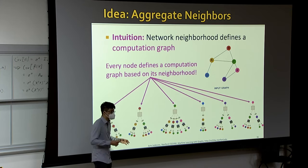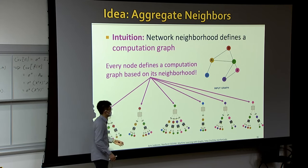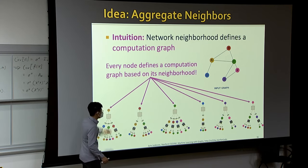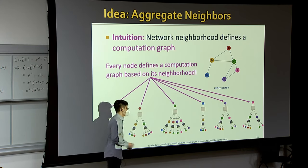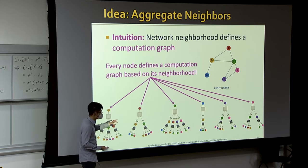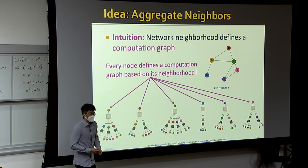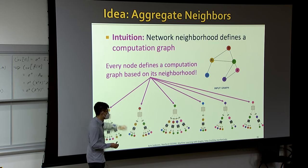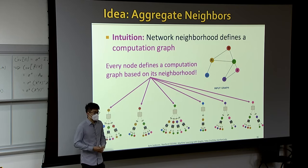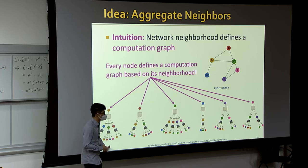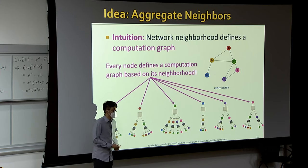We define a computational graph for each node in the network. Different nodes have different computational graphs because their local neighborhood structures differ — this is precisely how GNNs differentiate nodes. A node can appear multiple times in a computational graph: for instance, node A is a two-hop neighbor of itself, which is allowed.